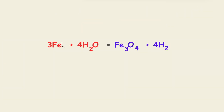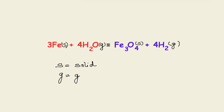Besides balancing the equation, we also have to write the state of the elements or compounds taking part in the reaction. In this reaction, iron is solid, water is in the gaseous form, iron oxide is in the solid form, and hydrogen gas is in the gaseous state.